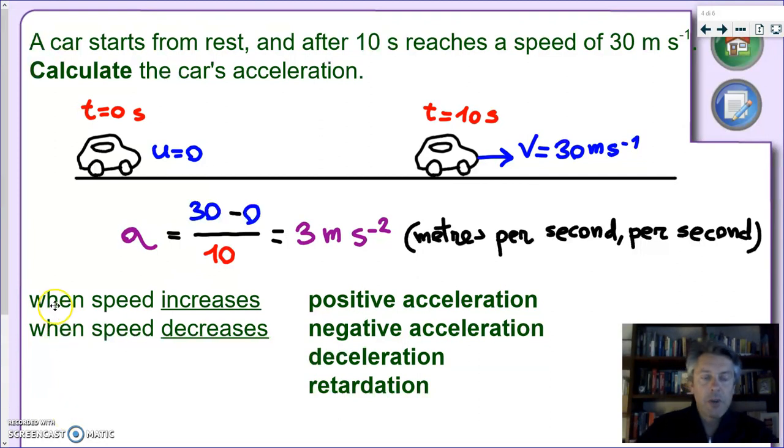So here in this problem we had a speed that increased, it went from zero to thirty, so that meant that the acceleration was positive. So in these cases we can just say there's an acceleration, or if we want to be a bit more complete we'll say the car underwent a positive acceleration.